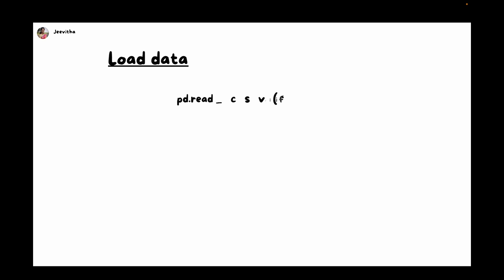The next step is to load data. When it's machine learning, we need data. The data will be in two forms: it can be CSV or Excel format. You can use Pandas to load that data — pd.read_csv or pd.read_excel to load CSV and Excel files. Once you load the data, you have to do domain analysis.